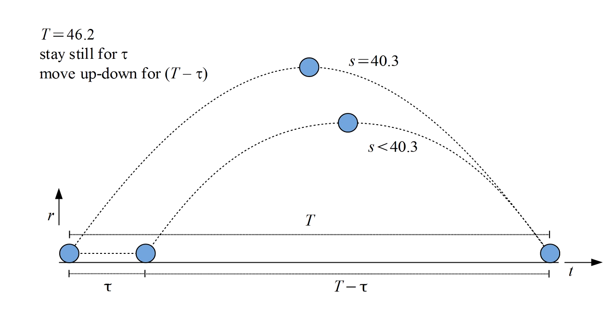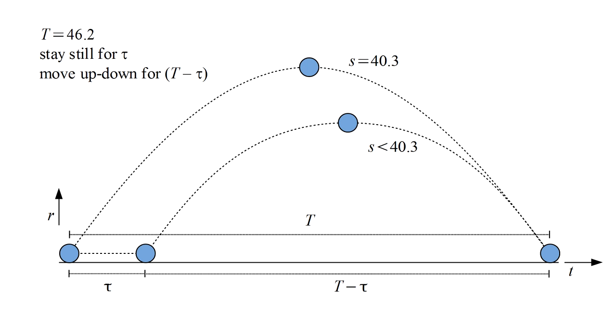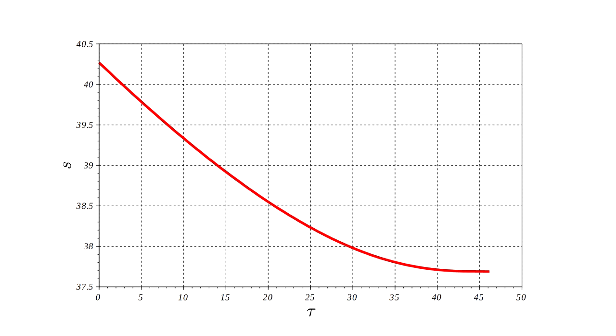For tau greater than zero, we find that s is less than 40.3. In fact, plotting s as a function of tau shows that as tau increases, s decreases. Starting with tau equals 46.2 and decreasing it to zero, we have a continuous transition from the local observer path to the up-down path, in which the clock time continuously increases.